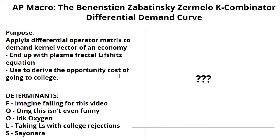Well, it's really simple, and any third grader can understand it. It's about applying the differential operator matrix to the demand kernel vector of an economy such that you end up with a plasma fractal Lifshitz equation that you can use to derive the opportunity cost of going to college.